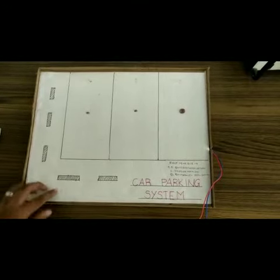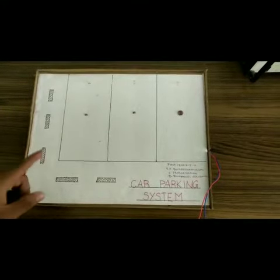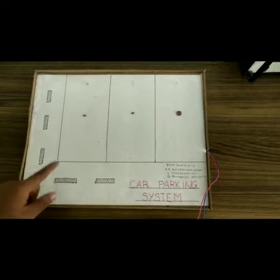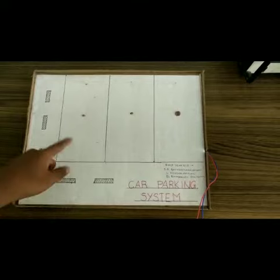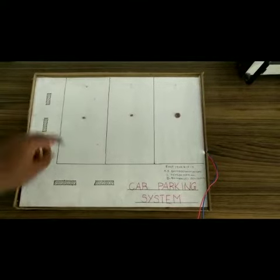Here is our working. When the LDR is kept in an open surface, the incident light falls on the LDR so that the resistance will increase more than 1 mega ohm so that the current does not flow to the LED and the LED does not glow.